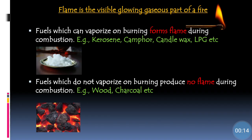Flame is the visible glowing gaseous part of a fire. When you light a matchstick, what you see as a glow is known as flame. On the basis of forming flame, you can divide fuels into two: the fuels which form flame and the fuels which do not form flame. Those fuels which can form vapors on burning can form flame during combustion — for example, kerosene, camphor, candle wax, and LPG.